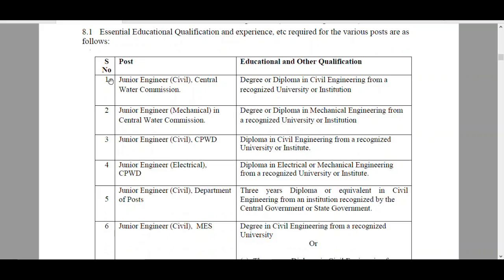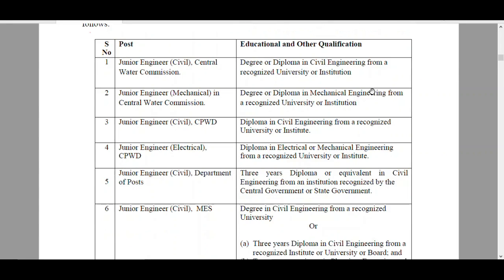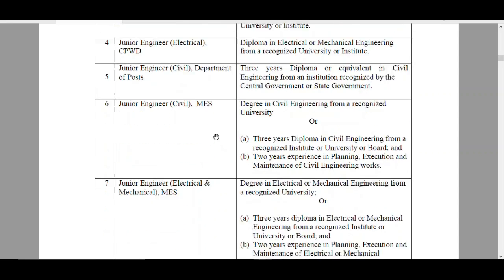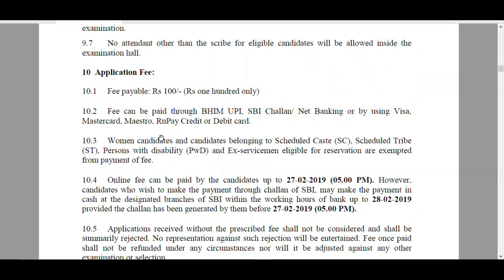For Junior Engineers - Civil, it is Degree or Diploma in Civil Engineering. For Mechanical, it is Degree or Diploma in Mechanical Engineering. For Electrical, it is Degree or Diploma in Electrical Engineering. The Application Fee is 100 rupees only.